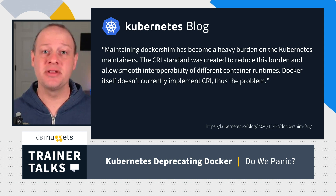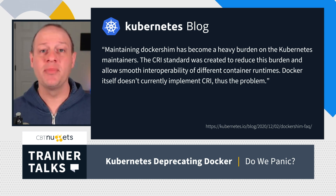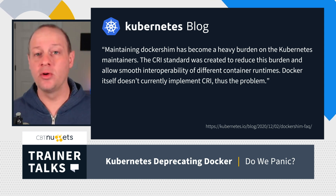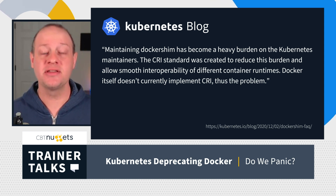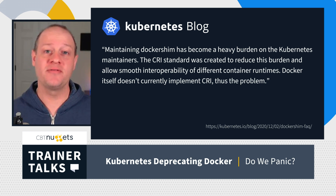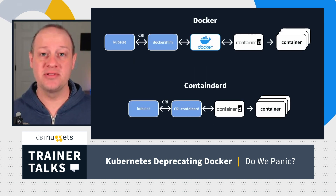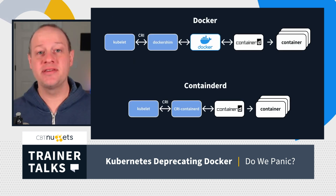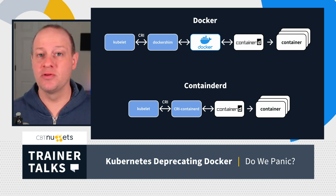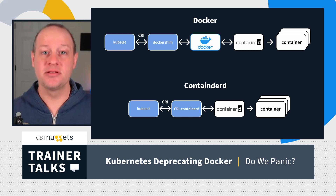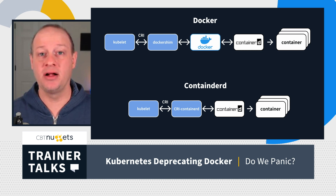Kubernetes has simply decided: we are no longer going to support the Docker Runtime Interface. We are going to interface directly with the Container Runtime Interface, CRI. And anyone who wants to use Docker simply needs to switch over to a runtime utility that supports CRI. Most notably, that's probably going to be something called Container D.